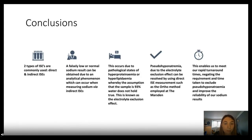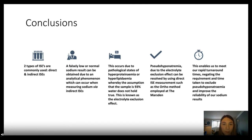In conclusion, there are two types of ISEs: direct ISEs using undiluted sample at the electrode surface, and indirect ISEs using diluted sample. A falsely low or normal sodium result can be obtained due to the electrolyte exclusion effect with indirect ISEs, occurring in pathological states of hyperproteinaemia or hyperlipidaemia where the assumption that the sample is 93% water no longer holds true. Pseudohyponatremia due to the electrolyte exclusion effect can be resolved using direct ISE measurements such as the Ortho method we use at the Marsden or by blood gas analysis. These methods allow us to meet our rapid turnaround times, negate the requirement to exclude pseudohyponatremia, and improve the reliability of our sodium results.